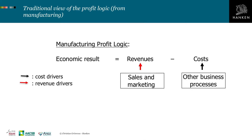In a manufacturing context and in manufacturing management models, the profit logic looks like this: sales and marketing drives revenues, while other business processes drive costs. The only thing the other business processes have to do is to produce a product that sales and marketing can successfully sell. So it is a fairly straightforward model.